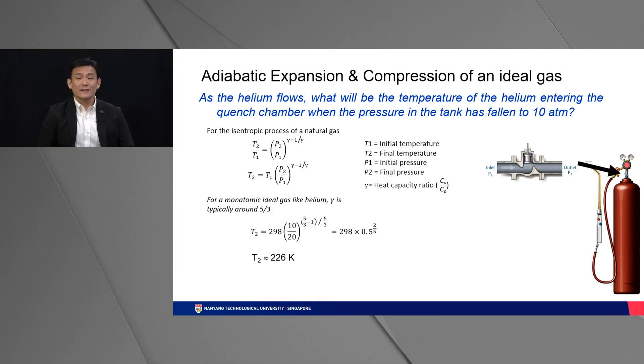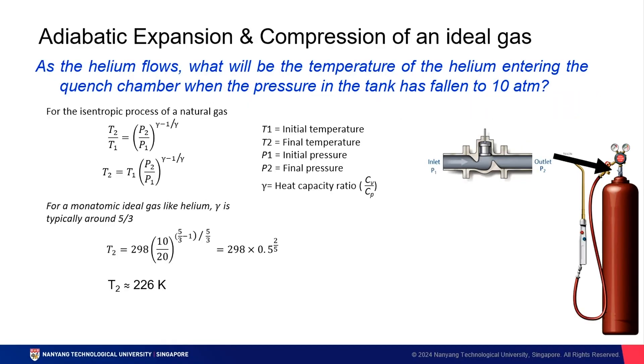So let's explore an extension to that problem. As the helium flows, what will be the temperature of the helium entering the quench chamber when the pressure in the tank has fallen to 10 atmospheres? If we remember correctly, we started with an initial pressure of 20 atmospheres. As helium exits the tank, the pressure in the tank drops to 10 atmospheres. And we want to know how that has affected the temperature.